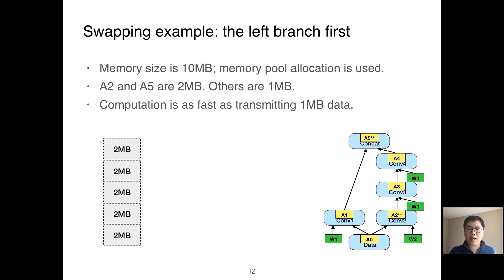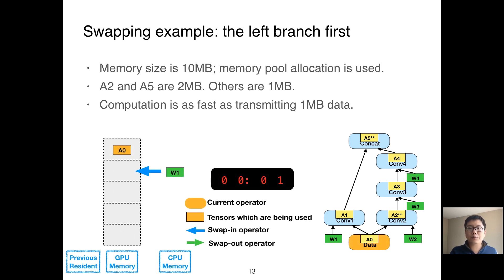All these assumptions are mainly used to demonstrate our example. We first check the case which schedules the left branch first, which is to execute convolution 1, then 2, 3, and 4. The orange operator represents the operator which is currently being executed, and the orange tensor means it is created by that executing operator. At T1, only the data or input operator can be run and it requires one memory object to store A0. Also, in order to overlap communication, we prefetch the W1 tensor from CPU memory as it will be used by convolution 1 next.